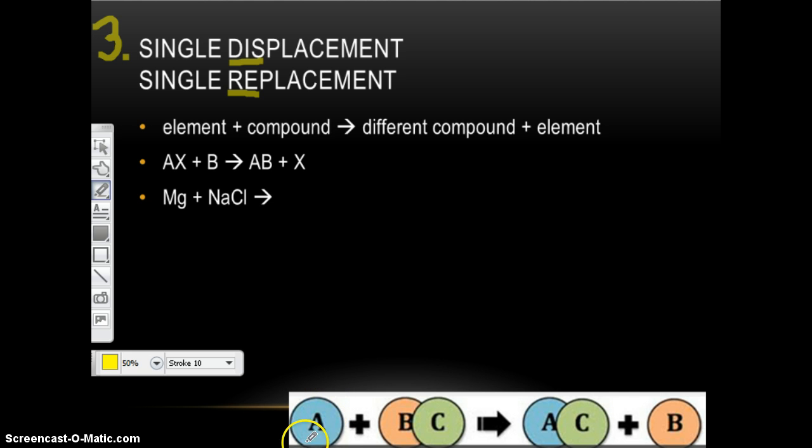So AX plus B yields AB plus X. And down here in the bubbles you can see, this time they said A plus BC yields AC plus B. So it doesn't matter if you write the element first or if you write the compound first. It doesn't matter. The big thing is you make a new compound plus an element. Now, you can always tell if it's a compound because it has at least two capital letters.